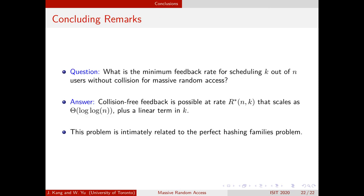To conclude, we sought to answer a simple question: what is the minimum amount of feedback required for scheduling K out of N users without collision for massive random access? We found that the optimal collision-free feedback rate scales as Theta(log log n) plus a linear term in K. We also showed that this problem is intimately related to the perfect hashing problem. Thank you for listening.